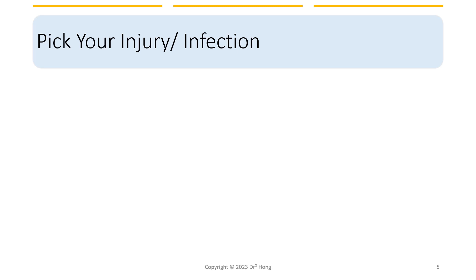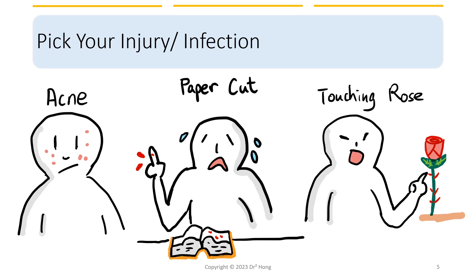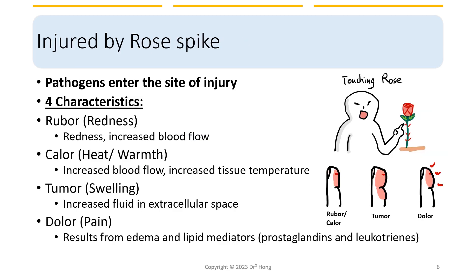We're going to look at an example of injury to describe what happens with acute inflammation. Pick your injury or infection — acne, a paper cut, or touching a rose. This little person decided to put his finger on the spike of the rose and got injured. The rose is not exactly clean — it grows outside in nature — and pathogens enter the site of injury.